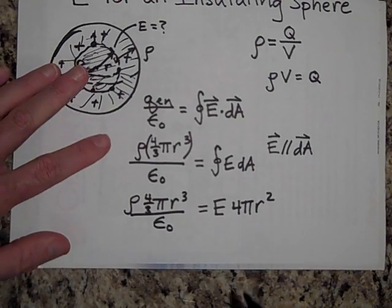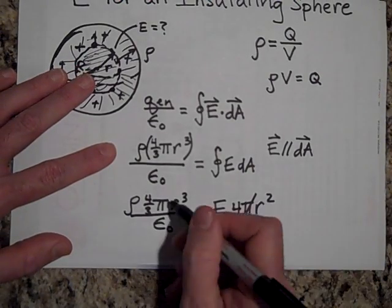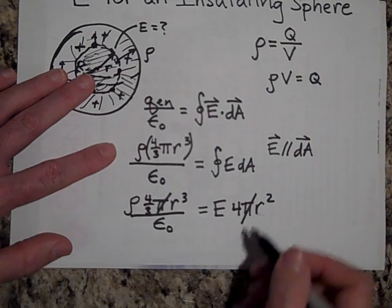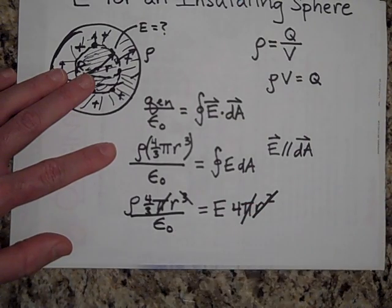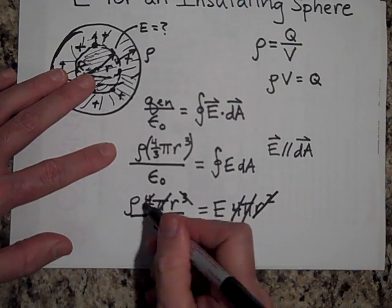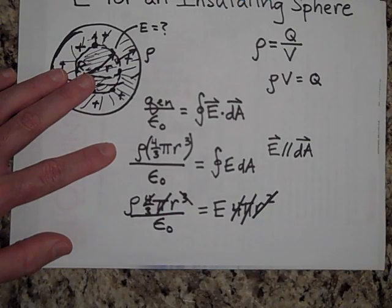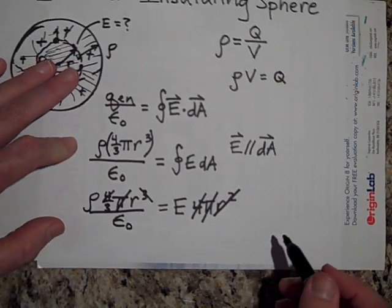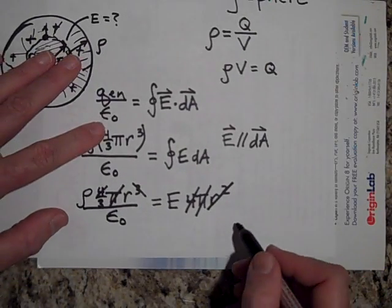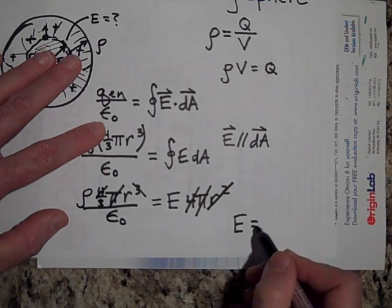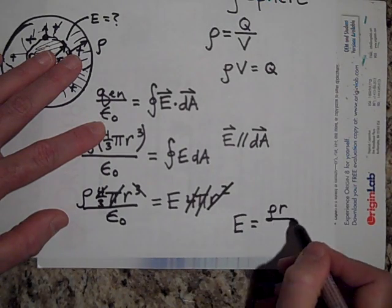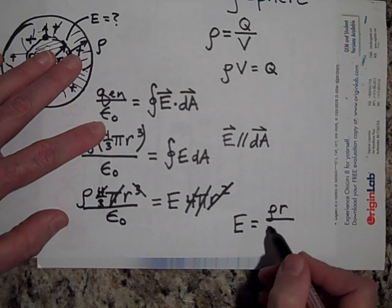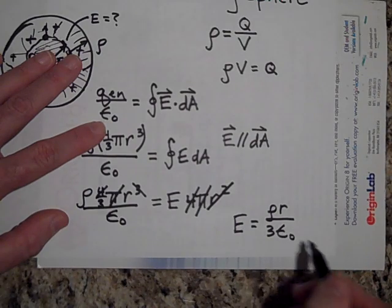Cancelling a pi, an r squared, and a four from both sides, we arrive at the result: the electric field inside the insulating sphere is E equals rho times r over three epsilon-naught.